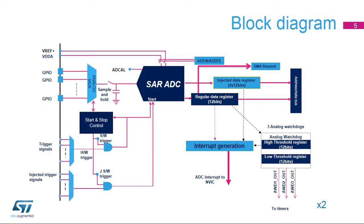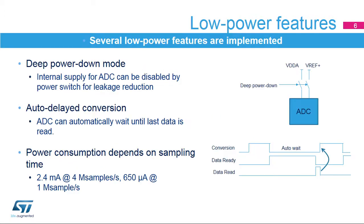This slide shows the general block diagram for the three analog-to-digital converters embedded in the STM32-H7. The STM32 MP1's ADCs support a deep power-down mode. When the ADC is not used, it can be disconnected by a power switch to further reduce the leakage current. Auto-delayed mode makes the ADC wait until the last conversion data is read before starting the next conversion, avoiding unnecessary conversions and thus reducing power consumption.